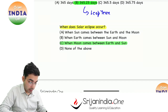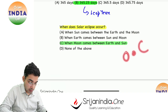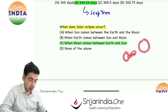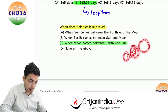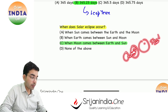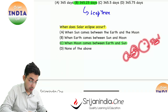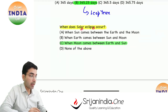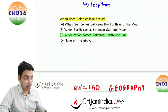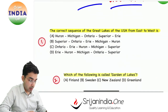Solar eclipse tab hota hai jab moon a jata hai Earth aur Sun ke beech mein. Because of the distance principle, moon nazdeek hai toh bada nazar aayega, aur iske current sun shadow pe a jata hai — sun block ho jata hai. So that is called solar eclipse.